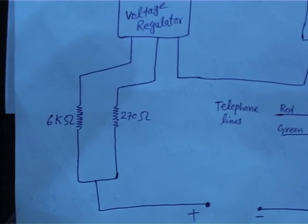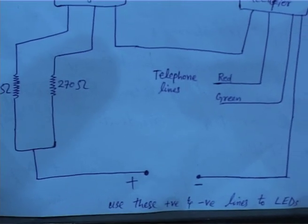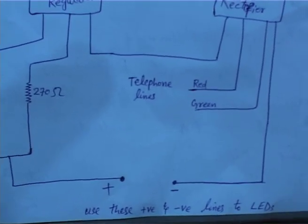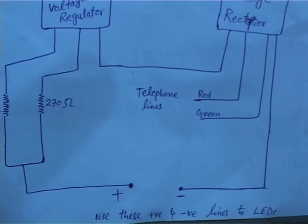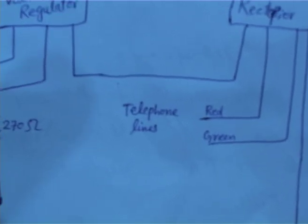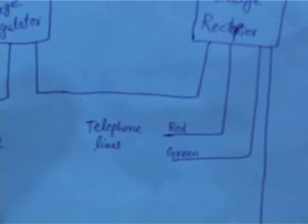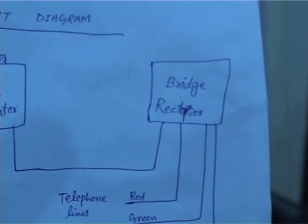You need a voltage regulator, a bridge rectifier, and resistors: one is 270 ohm and the second is 6 kilo ohm. The basic circuit for this experiment is what you can see here.